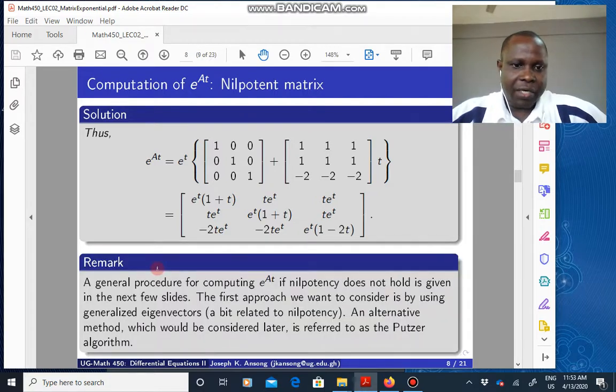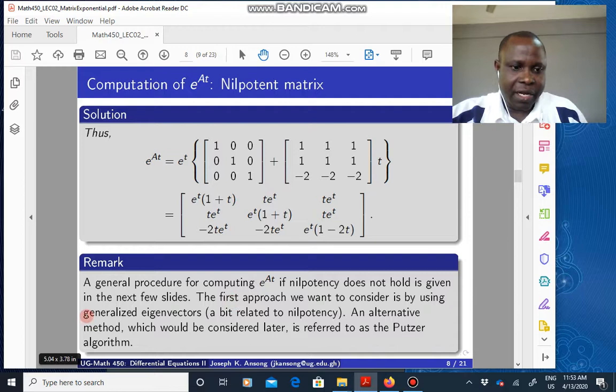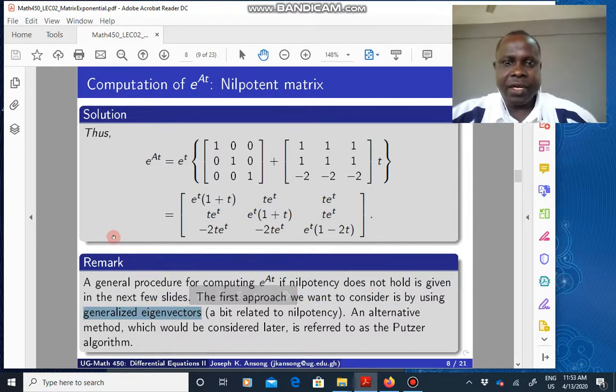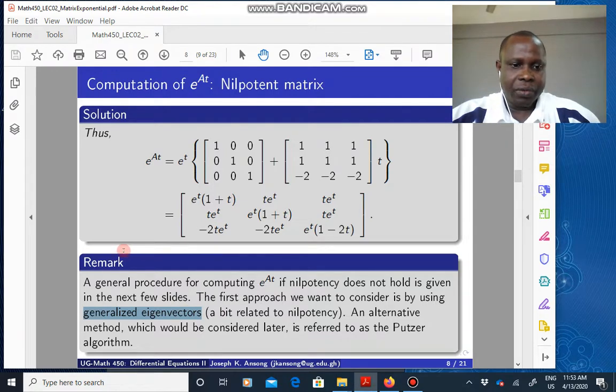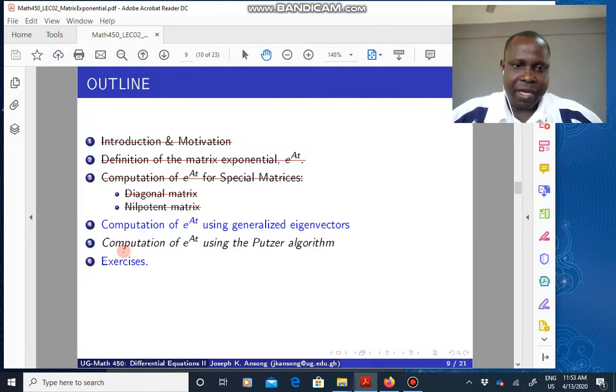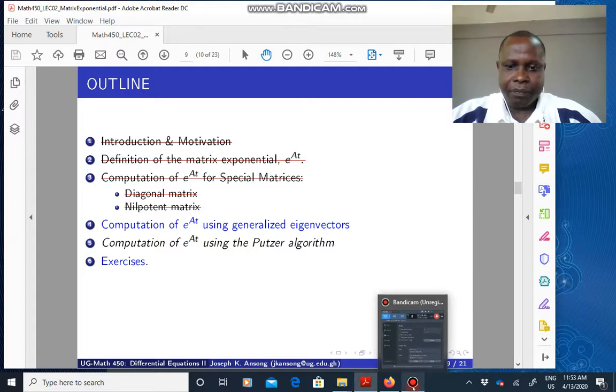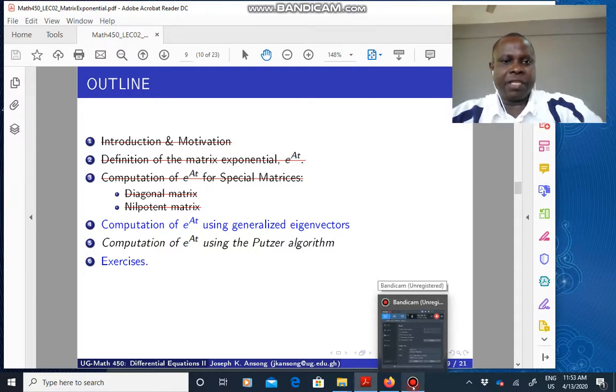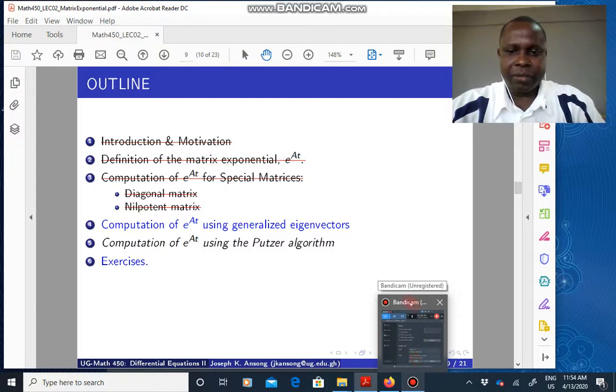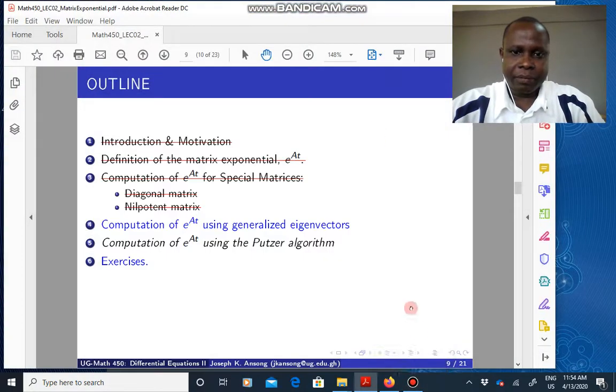So the next thing we'll look at is what happens if there's no nilpotency? Then that is where we are going to use the so-called generalized eigenvectors. So in the next video, that's what we're going to do. We'll use generalized eigenvectors to help us compute the matrix exponential. I would discuss this in another video, because I want to stop here before this program ends. Okay. Thank you.